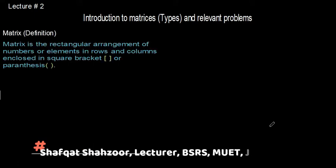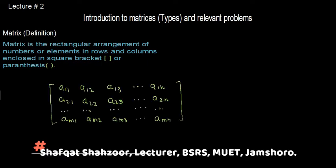A matrix by definition is a rectangular arrangement of numbers or elements in rows and columns, enclosed in a square bracket or parenthesis. We can also describe a matrix as a rectangular arrangement of numbers in a specific order, which is called the matrix.